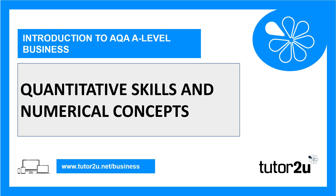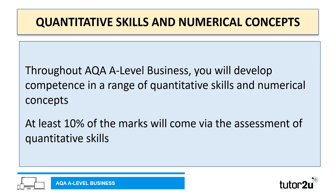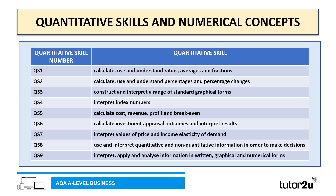Hello, it's Graham again. In this final video we're going to look at quantitative skills and numerical concepts. There are nine key quantitative skills — you'll find these in the specification but you'll also find them on screen. Quantitative skill one: calculate, use and understand ratios, averages and fractions. Quantitative skill two: calculate, use and understand percentages and percentage changes.